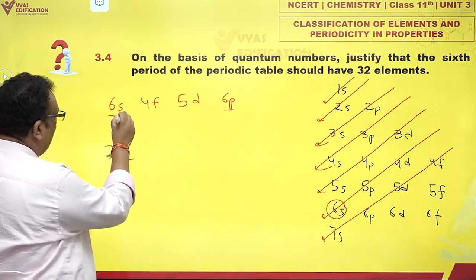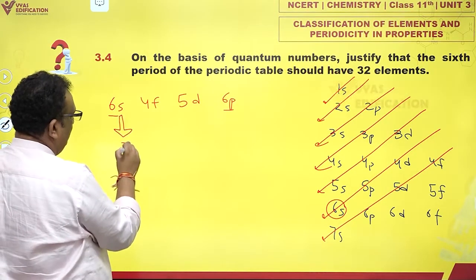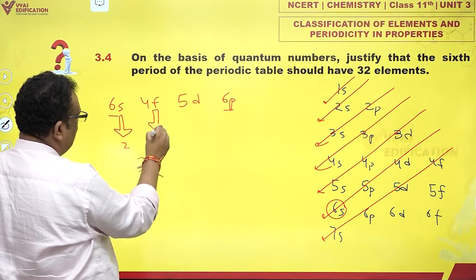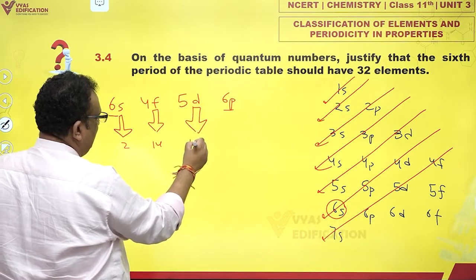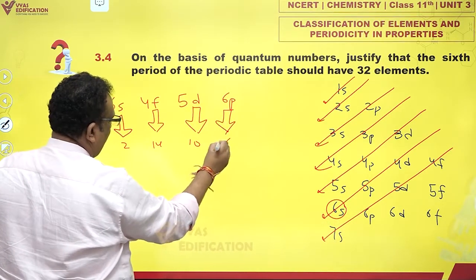Each s orbital contains how many? 2 electrons. F contains 14, d contains 10, and p contains 6 electrons.